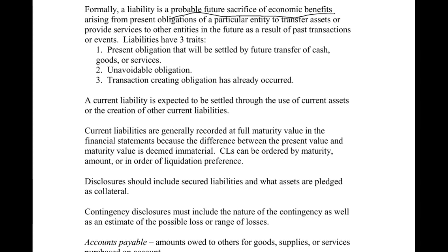Liabilities all have three traits. Anytime you see something like this with three traits, this is always a good multiple choice question — which one of the following, or which one is not, something like that. So anytime you see three or four bullet points in your book, you should be thinking multiple choice question. The three traits are: it's a present obligation that will be settled by future transfer of cash, goods, or services; it's unavoidable; and it has already occurred.